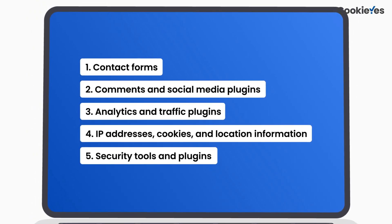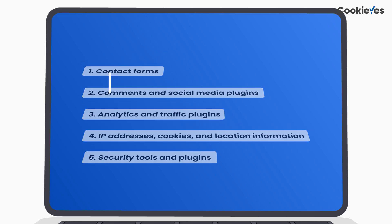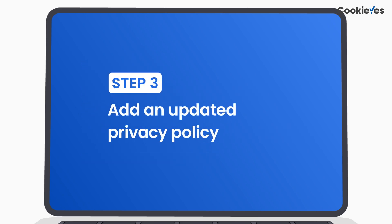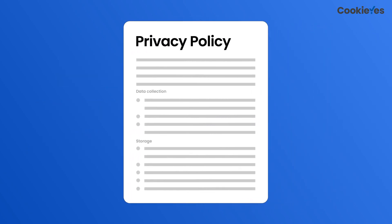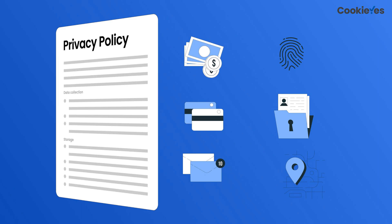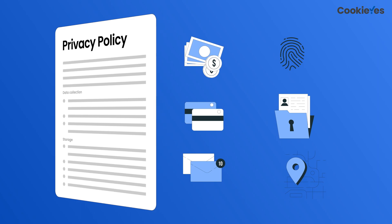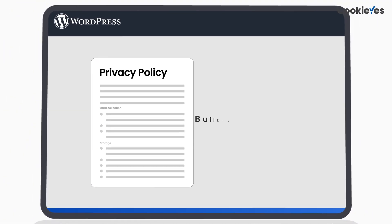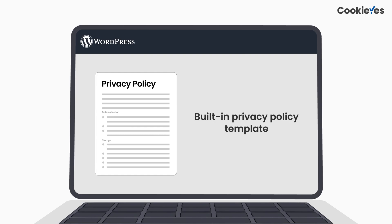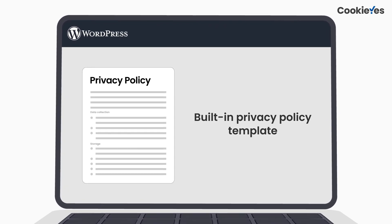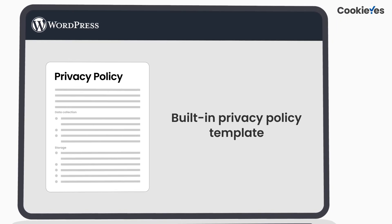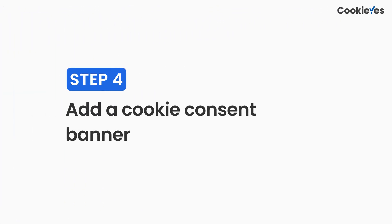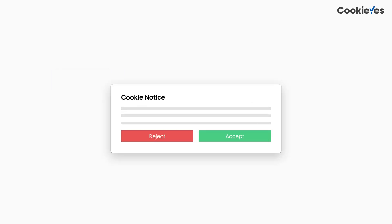Step 3: Add an updated privacy policy. The third step is to add an updated privacy policy. It should inform users about the personal data you collect, your purpose for collecting it, and how you ensure that the data is protected. To create your policy page, WordPress has a built-in privacy policy template that you can use — just add further information about your data collection practices and be sure to write it in clear and plain language.